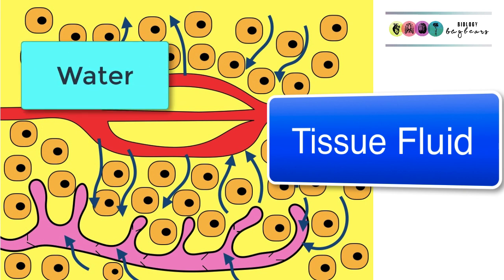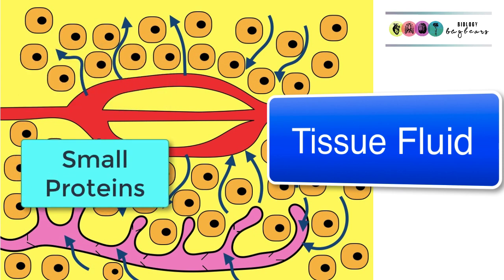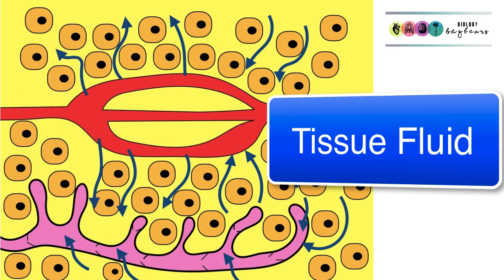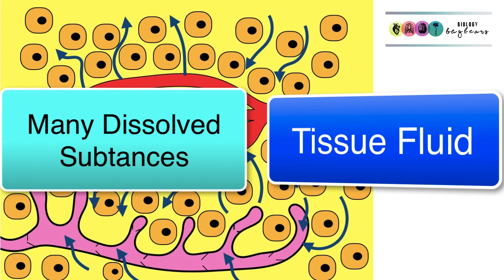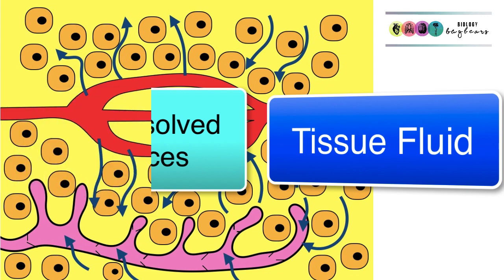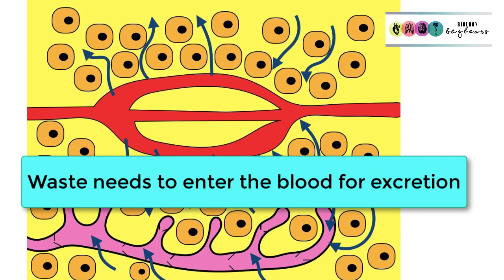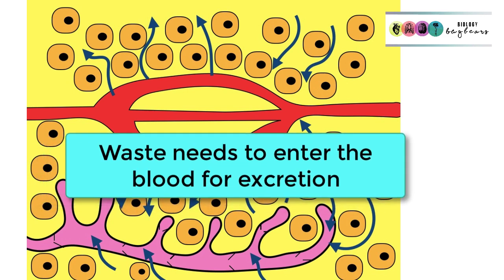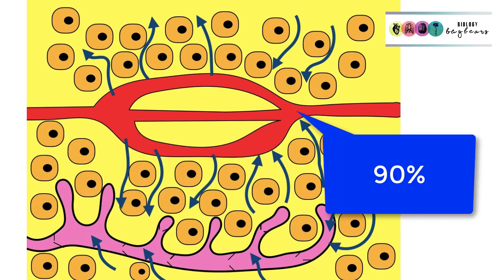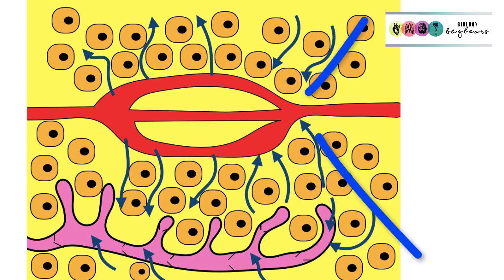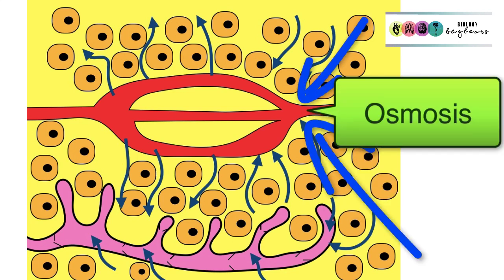The tissue fluid is mostly water that came from the blood plasma, but small proteins also came out and these need to be returned to the blood. Many dissolved substances are in that water on their way to the cells. Coming out of the cells and into the tissue fluid is waste, which needs to go back into the blood to be excreted. Importantly, 90% of the tissue fluid does go back into the blood at the venous end of the capillaries by means of osmosis, bringing dissolved waste with it.